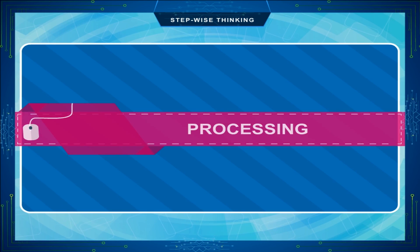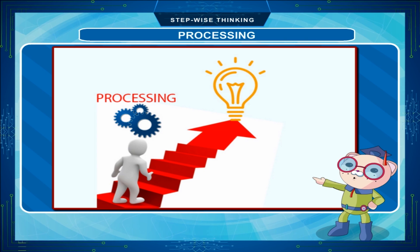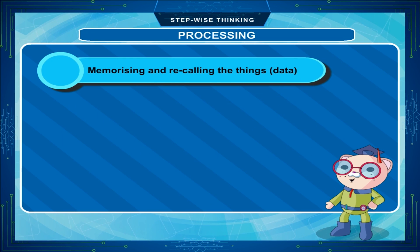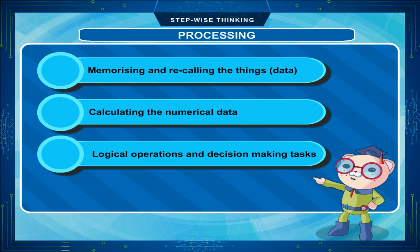Processing is the main step in thinking work. There are basically three types of work in processing: memorizing and recalling things or data, calculating numerical data, and logical operations and decision-making tasks.